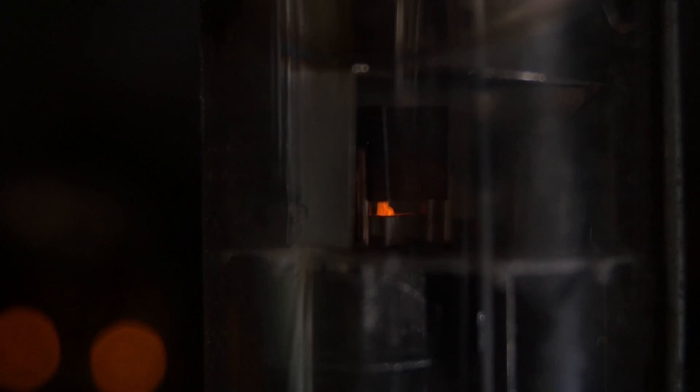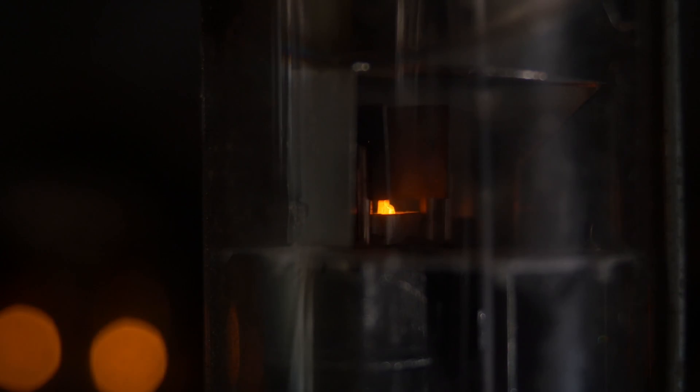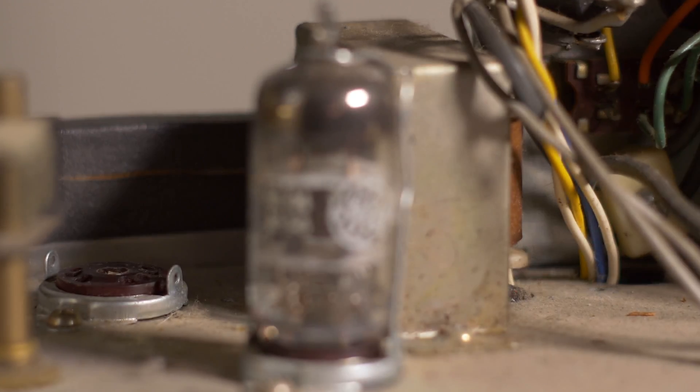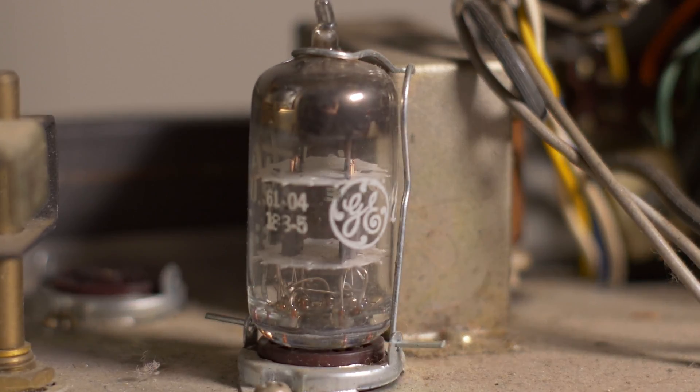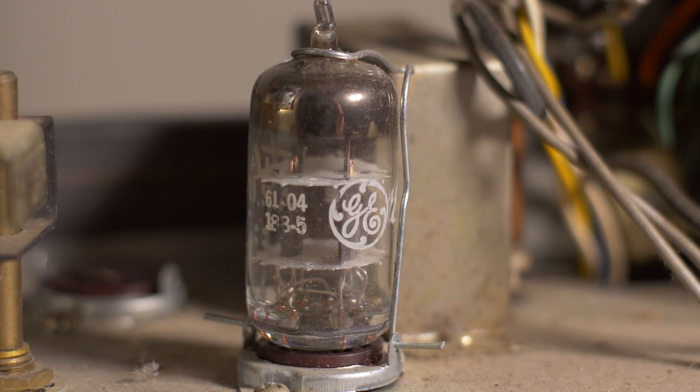A really cool part of this machine is the tube amp. It has four tubes, two 12-AT7 tubes, and two 6-BM8 tubes. The 12-AT7 tubes are made by GE, and the 6-BM8 tubes are made by NEC.